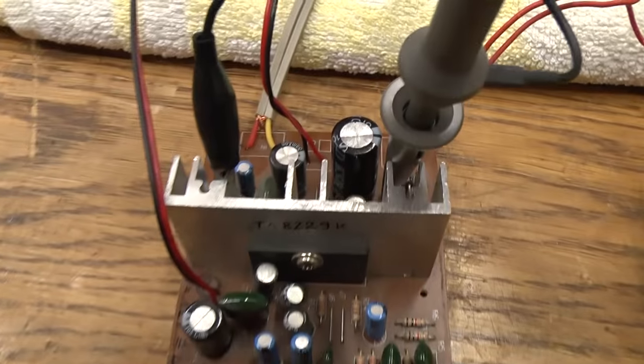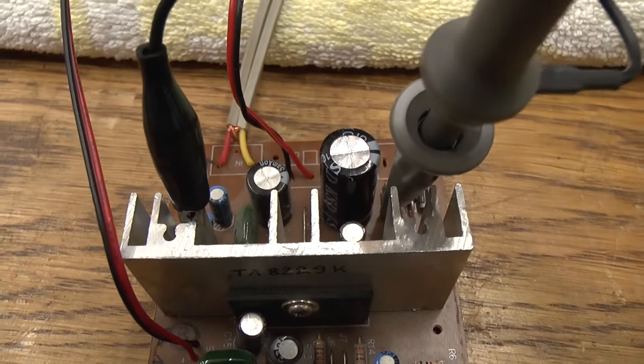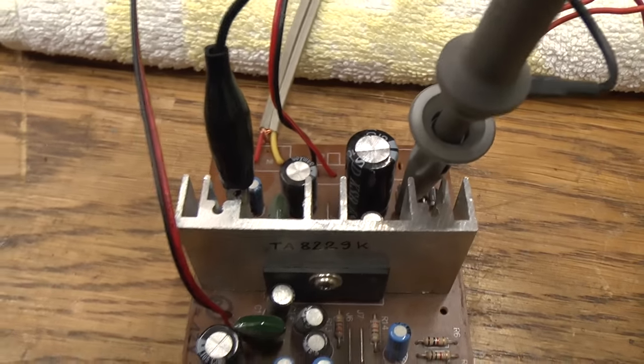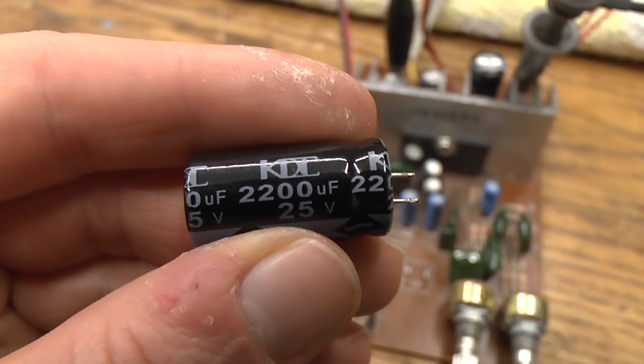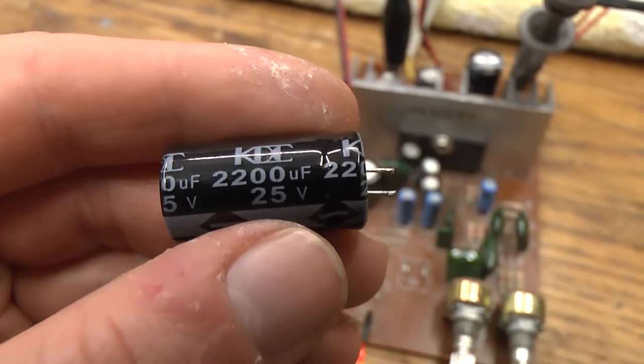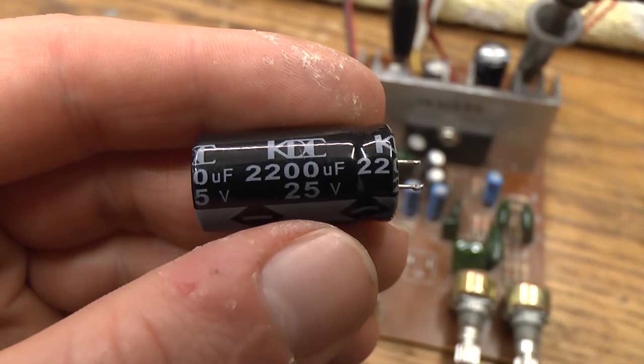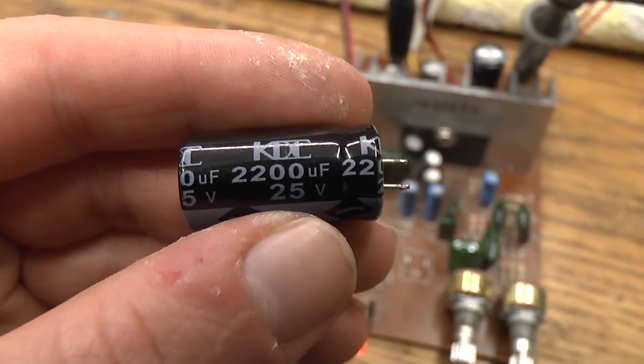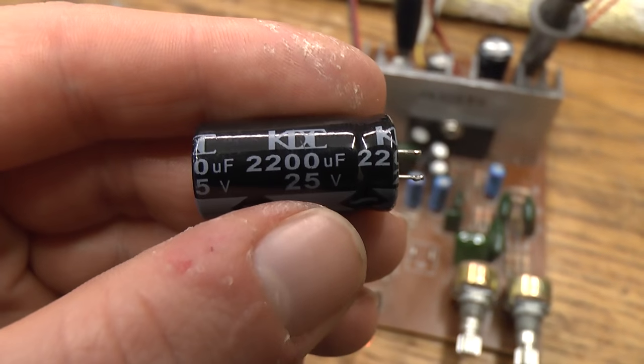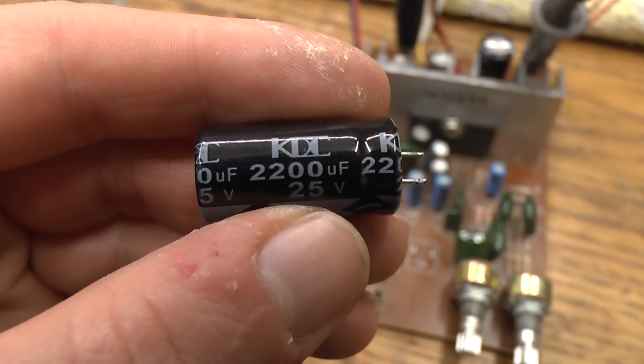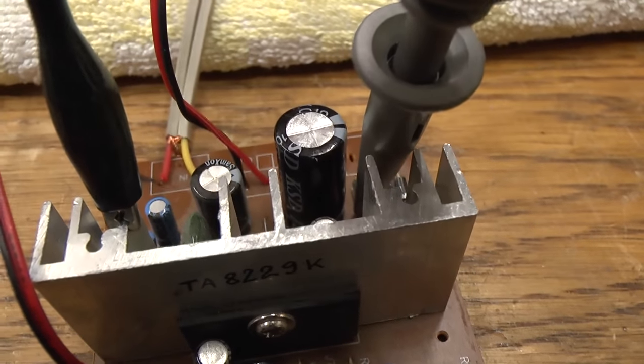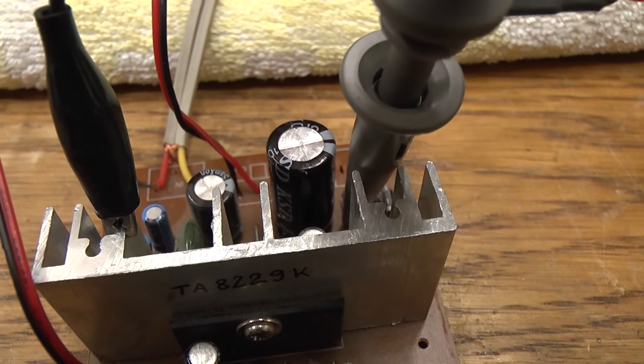Some more modifications. I replaced the input filter capacitor. This is the original capacitor. This is a 2200 microfarad capacitor and this actually turned out to be bad. The equivalent series resistance was fine but the capacitance was only 1700 microfarad. So that was definitely out of tolerance. Replaced it with a 3300 microfarad capacitor.